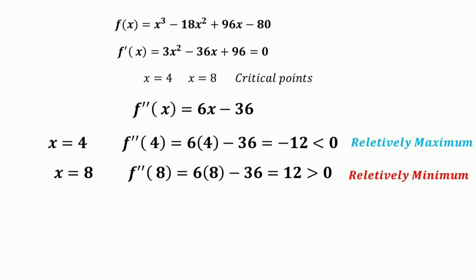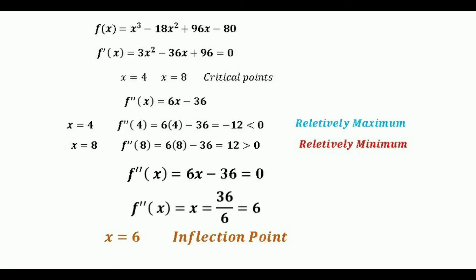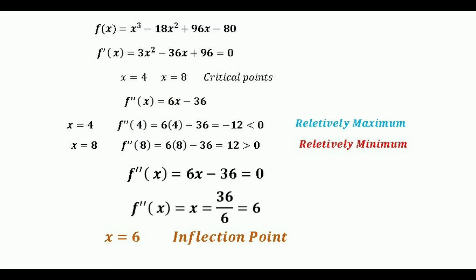Now we want to find the inflection point. We set the second derivative equal to zero: 6x - 36 = 0, therefore x = 36/6 = 6. Since f''(6) = 0 and the concavity changes between x = 4 and x = 8, there is an inflection point at x = 6.